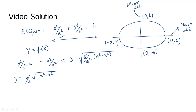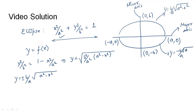Since we are taking a square root it will have both positive and negative signs. The positive sign is for the curve above the x-axis: y = b/a · √(a² − x²), and the negative sign is for the part below the x-axis: y = −b/a · √(a² − x²).